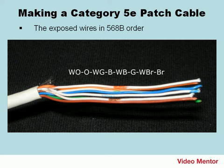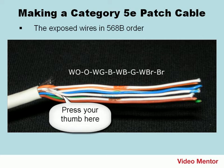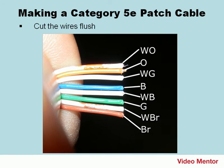Start with the white-orange wire and move down the line as illustrated. As you work, hold the wires in place with your thumb so they don't fall out of place. Then you want to cut the wires flush. Cut the wires to length and make sure they're flush — I like to do this with the RJ45 crimper, but any straight cutting edge will do.